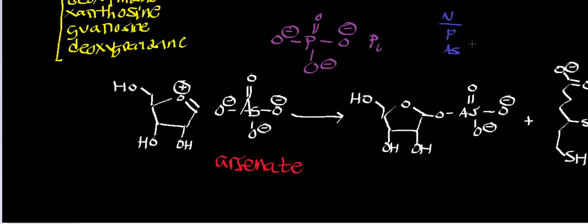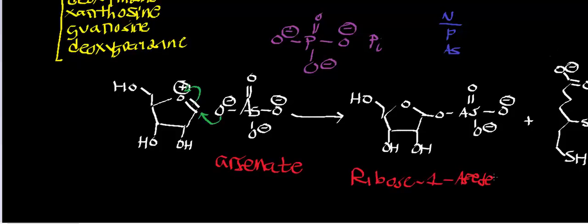Arsenate can also mess with nucleotide catabolism. It's going to perform a very similar mechanism to what we just saw. When we generate the transient oxonium species in the active site, arsenate can nucleophilically attack the oxonium carbon identically to the way that phosphate does. That collapses the oxonium species back into a cyclic ether, and now we have this molecule — ribose-1-arsenate. This is not a good molecule.